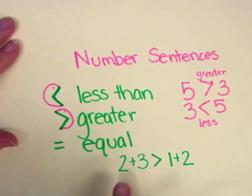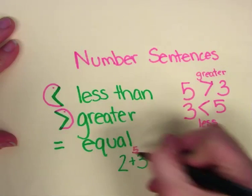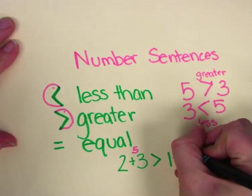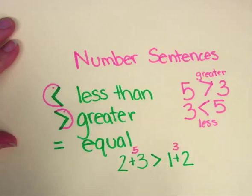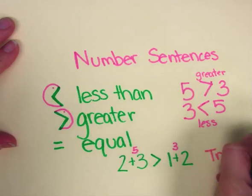To do that, I look at one side of my symbol, two plus three. The answer to that is five. I write the five on top so I can remember my answer. The other side is one plus two. One plus two makes three. So I put the three on top. When I read my number sentence now, I have five is greater than the number three. That is a true number sentence.